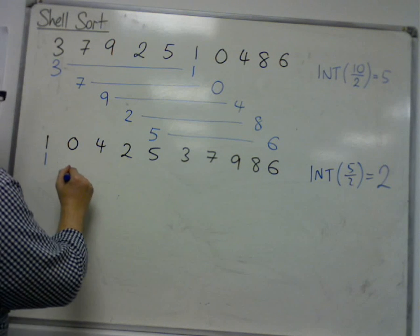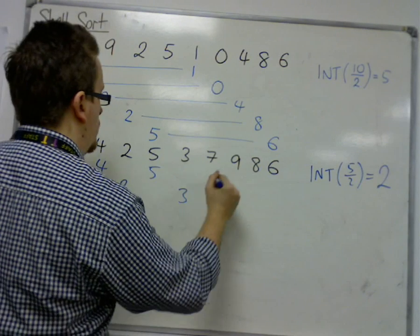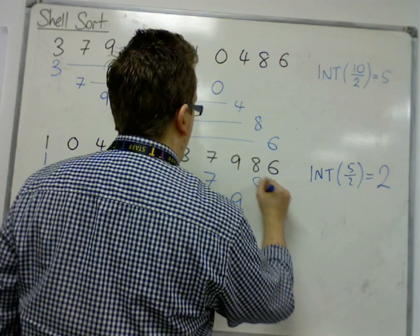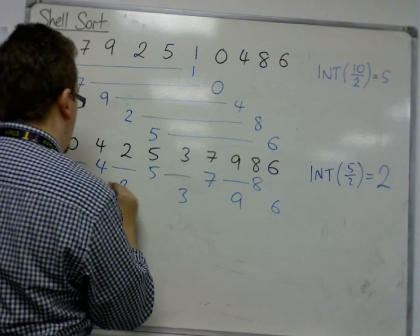So we're going to have 1, 0, 4, 2, 5, 3, 7, 9, 8, 6. So here's your first group. Here's your second group.